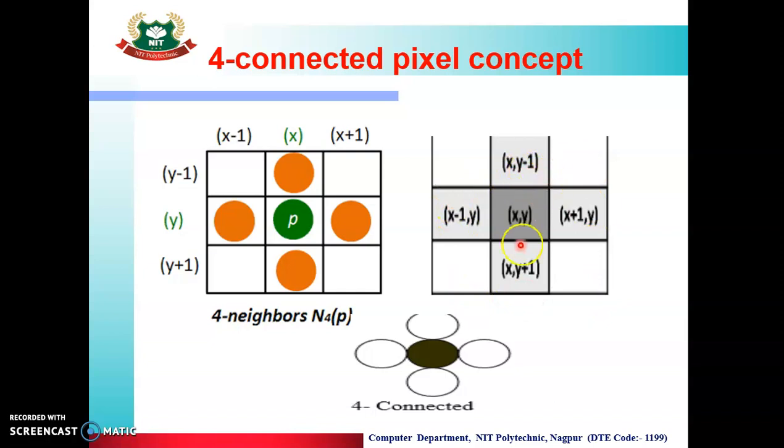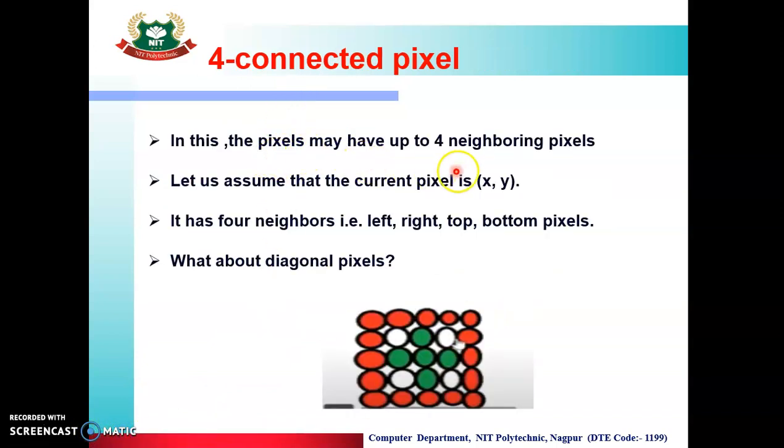So, this is shown in form of x and y. This is current pixel (x, y), and this is the right pixel at (x+1, y). Then, this is top side pixel, bottom side pixel, and left side pixel. So we can fill the color to nearest 4 pixels. In 4 connected pixel, we have up to 4 neighboring pixels: left, right, top and bottom.